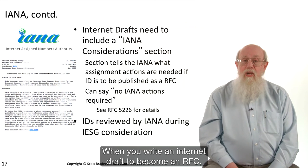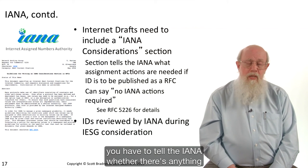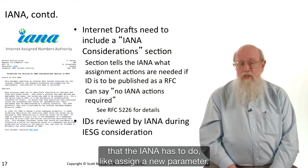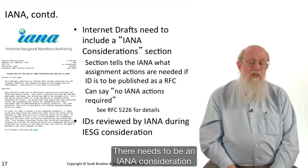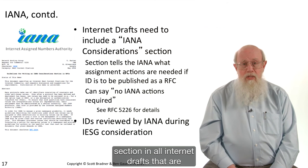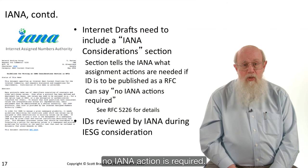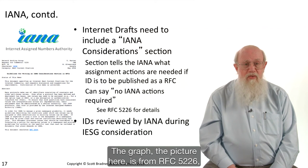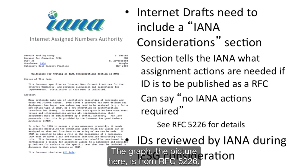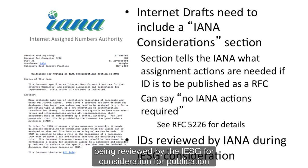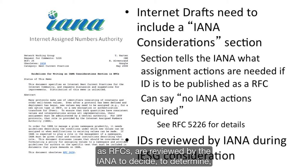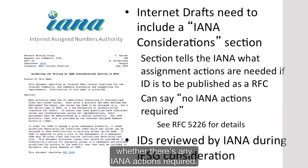When you write an internet draft to become an RFC, you have to tell the IANA whether there's anything the IANA has to do, like assign a new parameter. There needs to be an IANA considerations section in all internet drafts that are going to be published as RFCs. That section can say 'no IANA actions required.' The picture here is from RFC 5226, which tells you how to do that kind of assignment. Internet drafts being reviewed by the IESG are also reviewed by the IANA to determine whether any IANA actions are required.